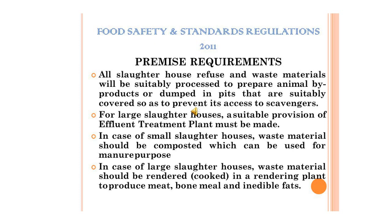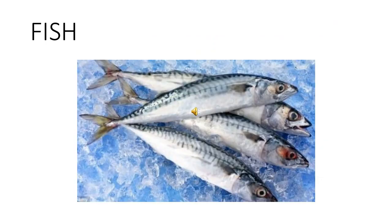Animals other than those to be slaughtered should not be allowed inside the shed. Fish deteriorates and loses its freshness because of autolysis which sets in after death and due to bacteria with which it becomes infected. Stale fish should be condemned.